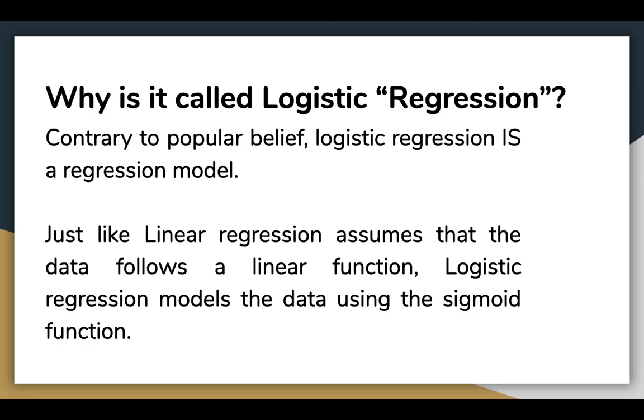Linear regression gives you a continuous output but logistic regression provides a constant output. An example of continuous output would be house price prediction or stock price prediction. An example of discrete output is predicting whether a patient has cancer or not or predicting whether a customer will click on an ad or not.